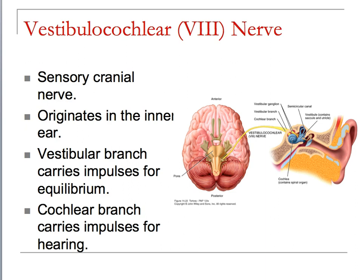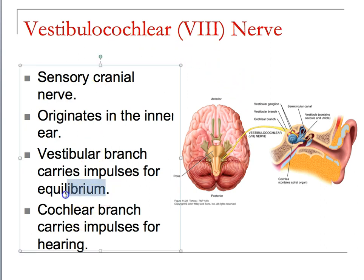The vestibulocochlear nerve is the cochlear piece — this is where we hear. The vestibular portion is balance and equilibrium. By equilibrium, I mean your orientation relative to gravity on the surface of the planet.